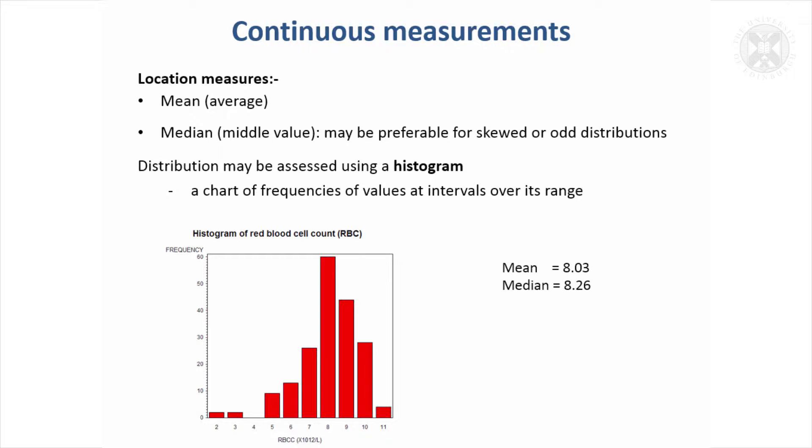We've already seen the mean or average is a good way to give an overall summary of the central location of the data. Another way that can be done is by the middle value. That's less common, but sometimes if you've got a very skewed distribution, this might be an example of a slightly skewed distribution.